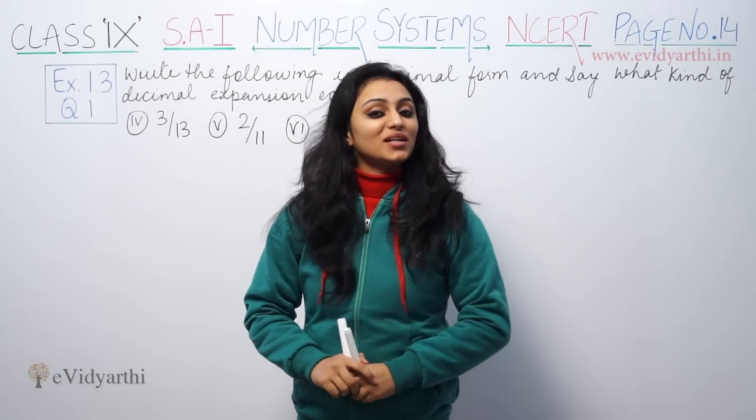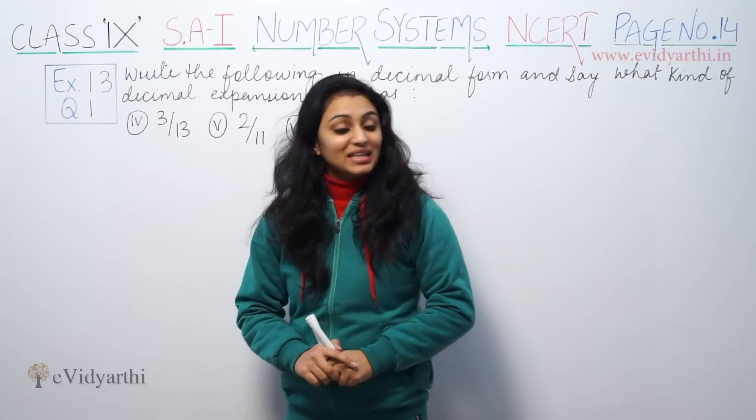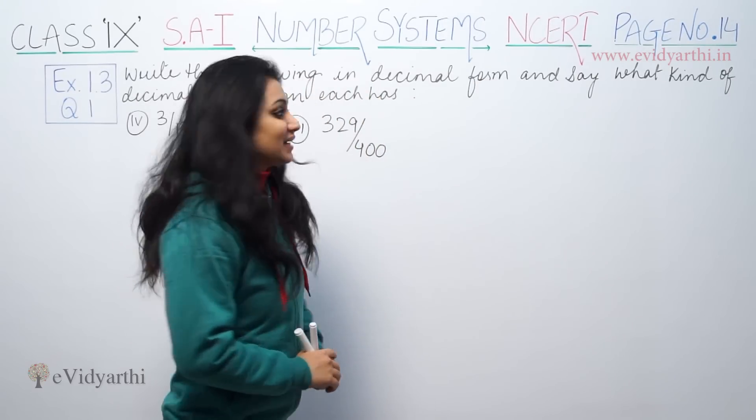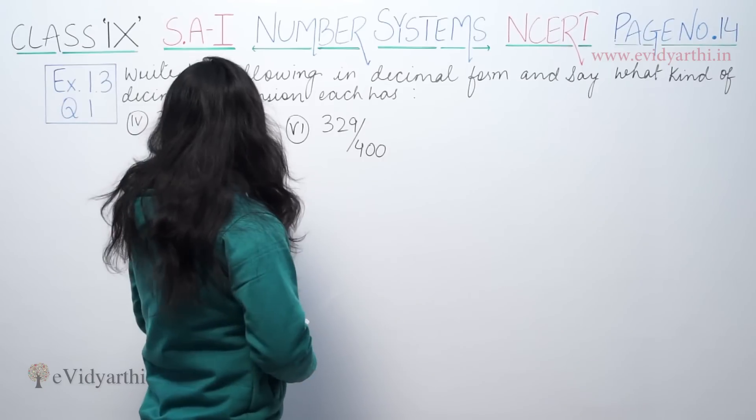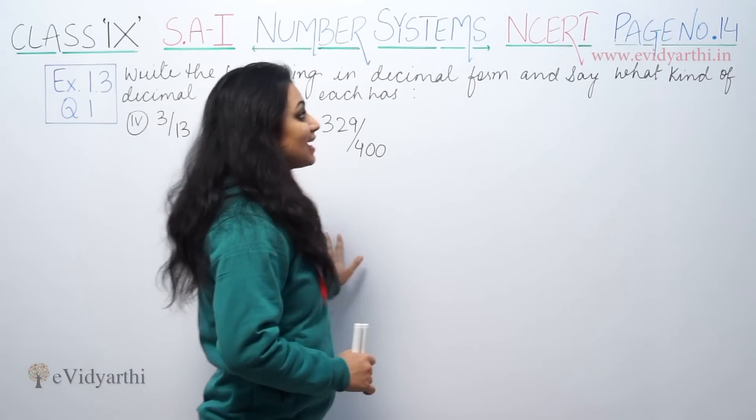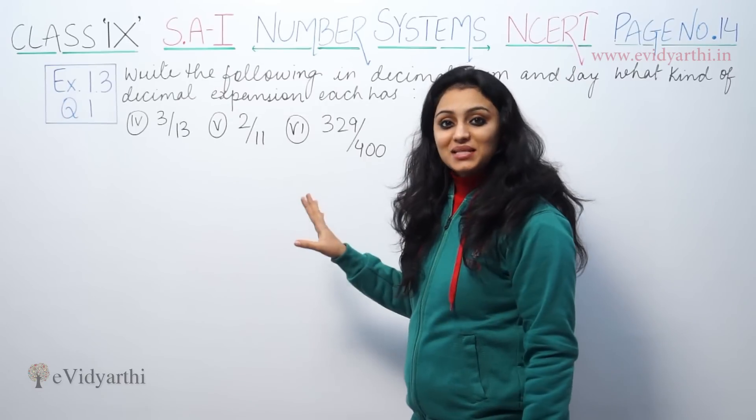Hey, what's up? This is Kujbu with another question of number systems. This is question number 1 from exercise 1.3, page number 14 from NCERT. Write the following in decimal form and say what kind of decimal expansion each has. First, let's see how the decimal expansion is.